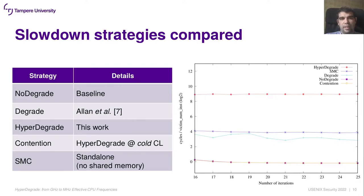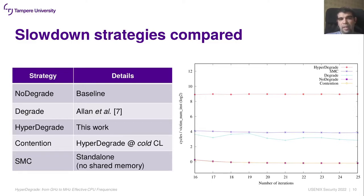The last degrade strategy is a standalone self-modifying code approach. There are different ways of triggering machine clears using SMC; in this case we are using the ISA instead of the cache. The curves in the middle of the figure suggest the SMC approach offers the same level of slowdown as the degrade strategy. However, this approach does not require shared memory with the victim. At the top of the chart are the HyperDegrade results, where it can be seen that it exceeds other strategies by several orders of magnitude.